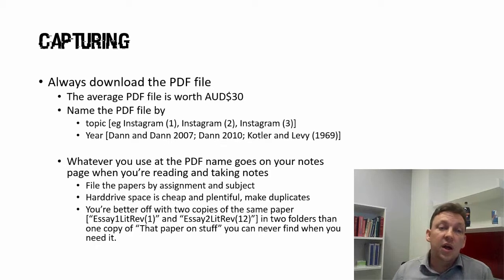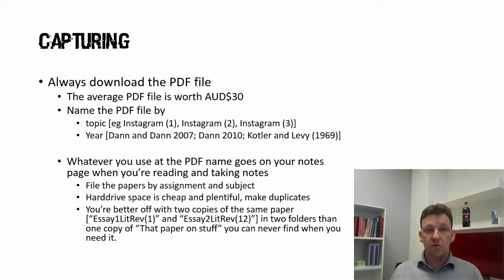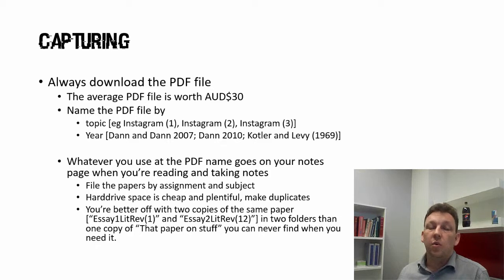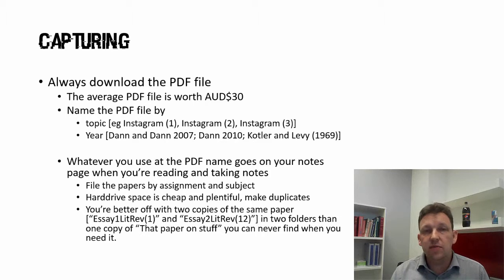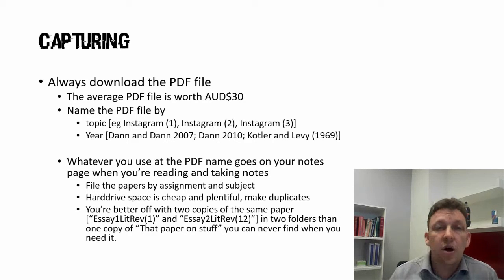There's a pro and con to that approach. If you've got a citation in your paper — Dan and Dan 2007 — and you need to find which file that was, naming by author makes life easier. However you do it, when you're taking your notes, your PDF file name goes on the notes. If you're going to take notes in Excel, your first cell is: what's the name of the PDF? That way you can find the paper again later. If you're working across multiple assignments and multiple assessment tasks, file the papers you're using for that assignment with that particular assessment. Drive space is cheap and plentiful — duplicate copies aren't an issue. It's much easier to find a paper if it's in the same folder as your essay draft.